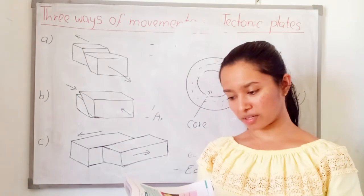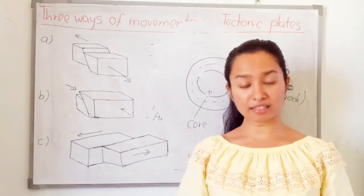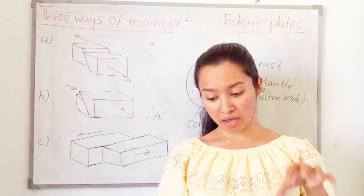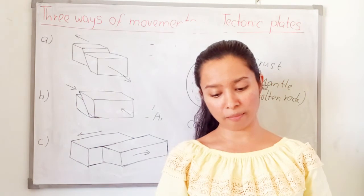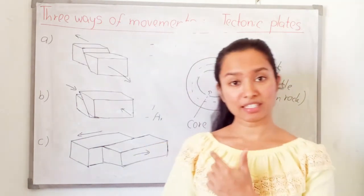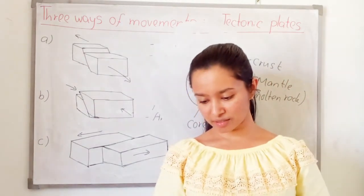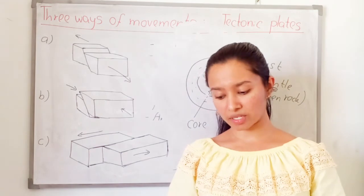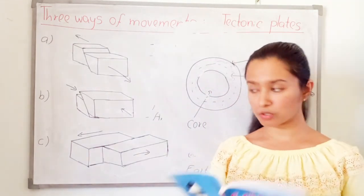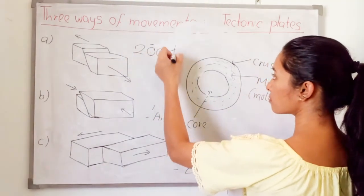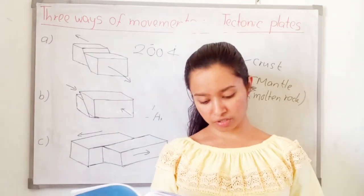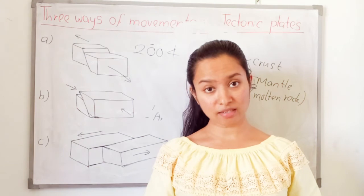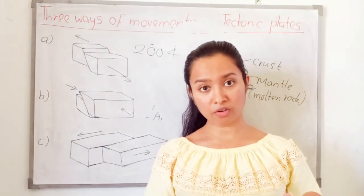The lesson is now over. In this lesson you have learnt about what are tectonic plates, the movements of plates, and plate tectonics. Both volcanoes and earthquakes occur at tectonic plate margins. You may remember the 2004 tsunami, which caused severe destruction — it occurred because of an earthquake near Sumatra Island, which also happened because of the movement of tectonic plates.